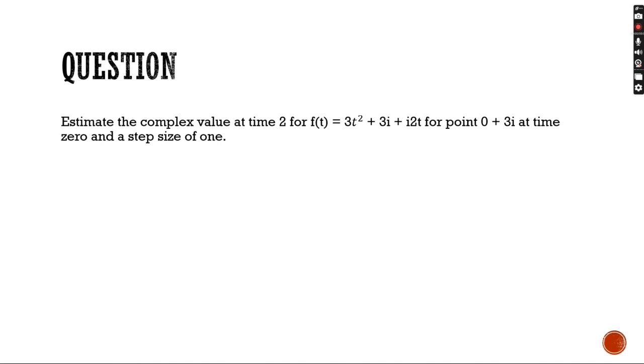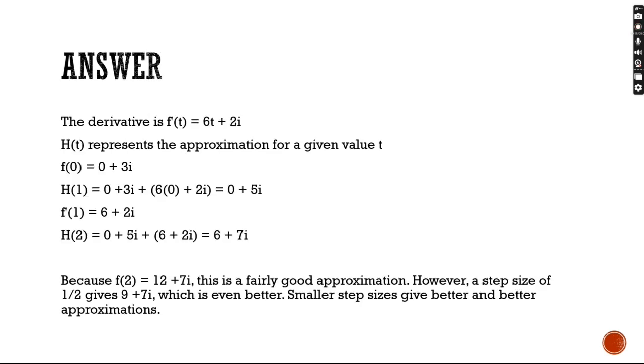We now have a question regarding approximation in the imaginary plane. Estimate the complex value at time 2 for f of t equals 3t squared plus 3i plus 2i t for 0.0 plus 3i at time 0 with a step size of 1. The derivative of f of t is 6t plus 2i. h of t will represent the approximation for a given value of t. We start with f of 0, which is 0 plus 3i, given in the problem.